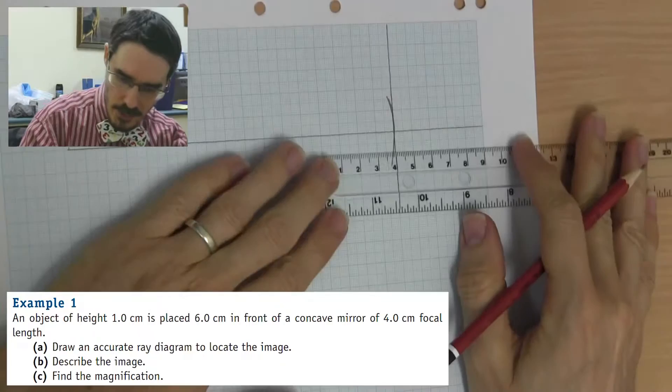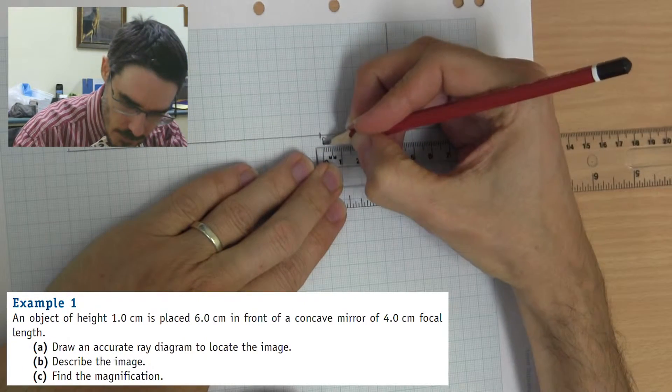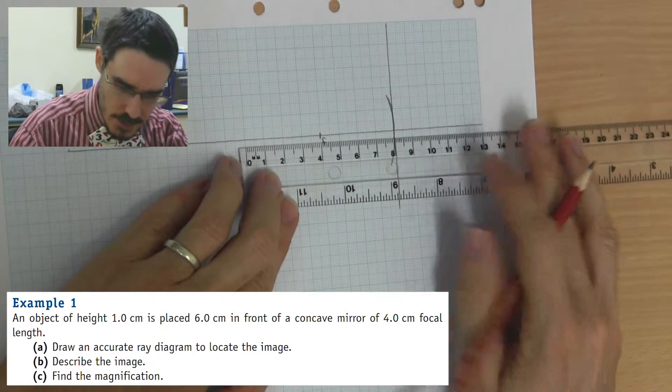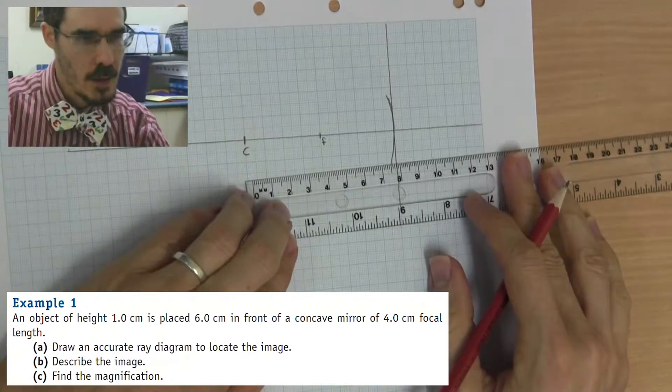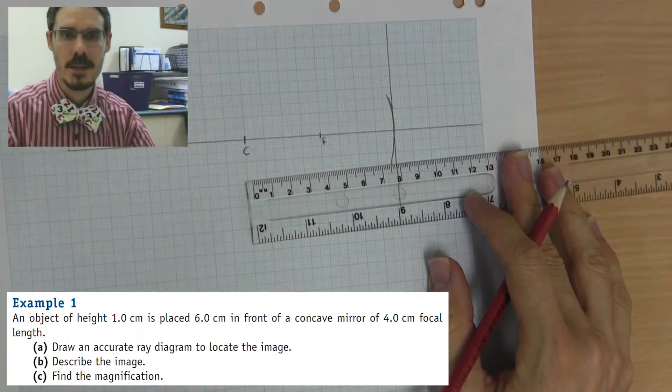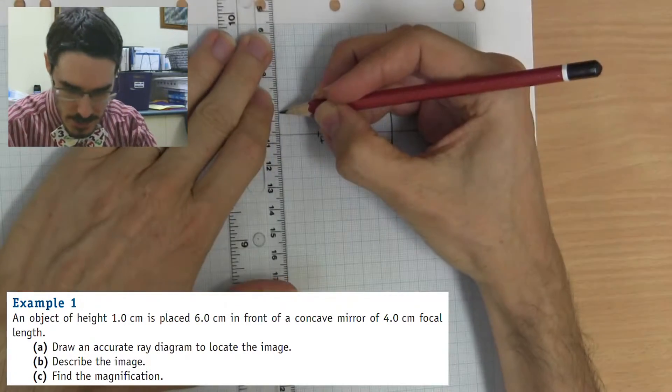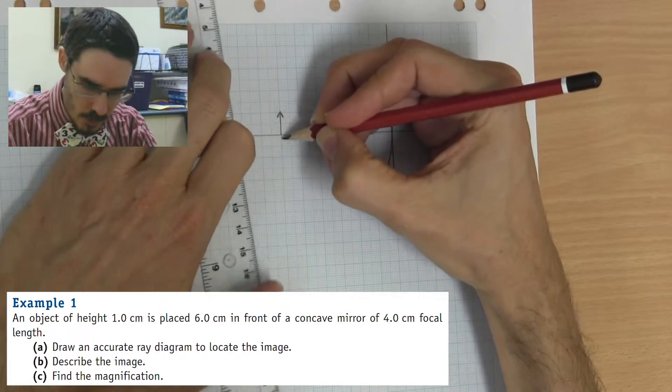So, the focal length is 4cm, focus, which means the centre of curvature is 8cm. The object is 6cm in front, so it's here and it's 1cm high. There's my object.